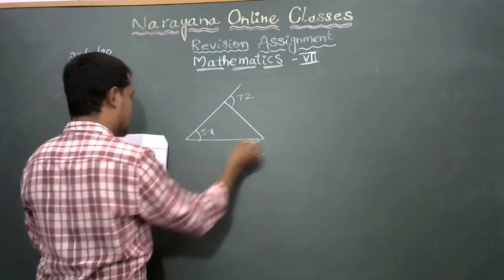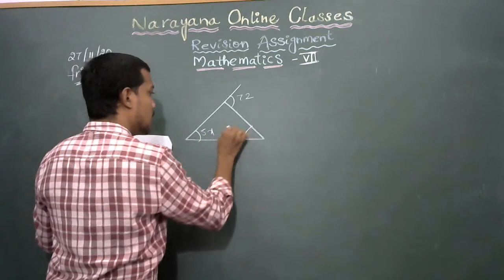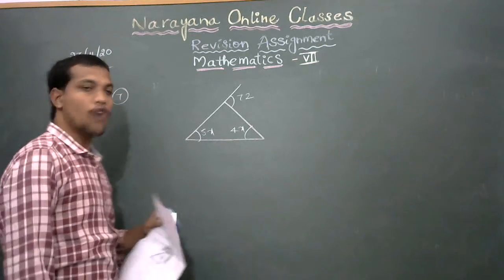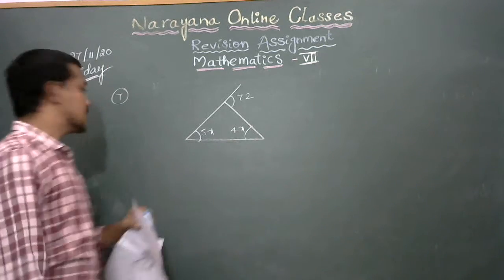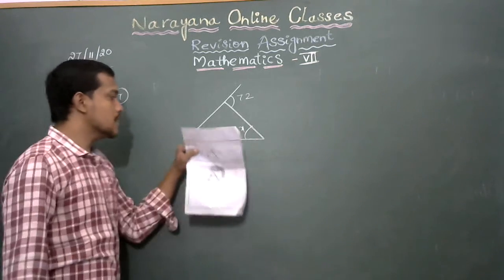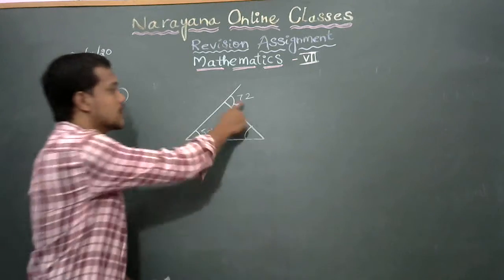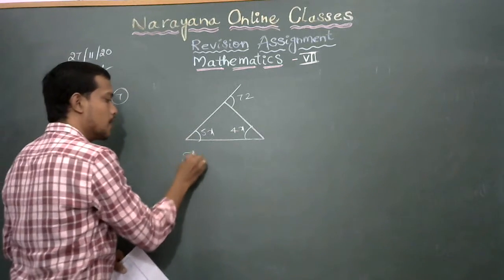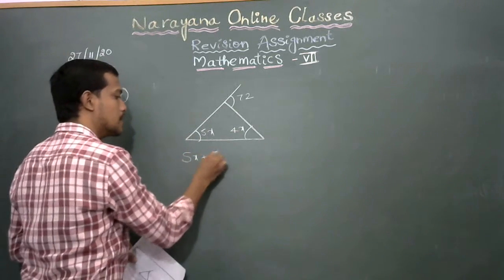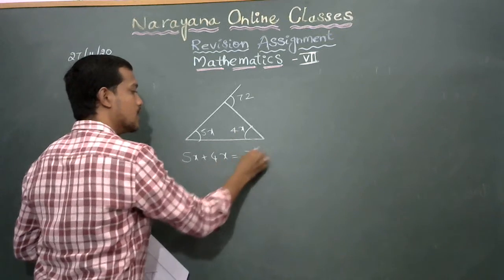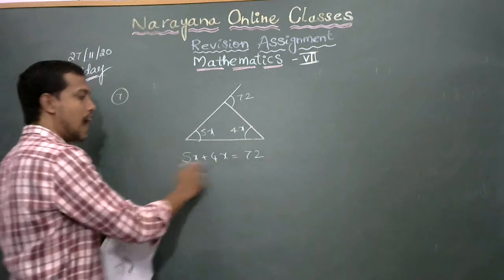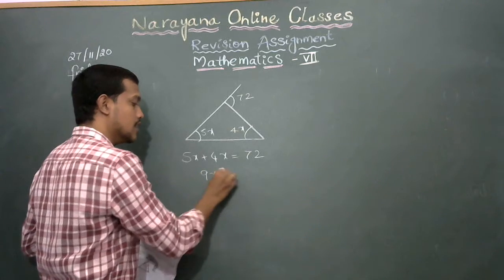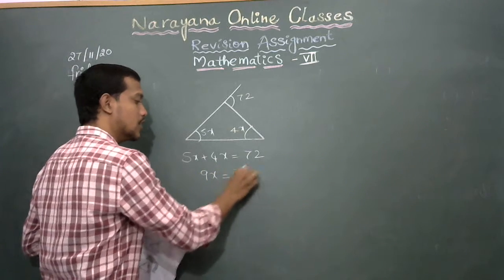Next problem: the angles given are 72 degrees, 5x, and 4x. The same process is followed here — these are the two interior angles and 72 is the exterior angle. So 5x plus 4x equals 72.